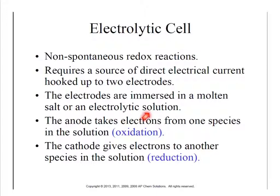In the case of an electrolytic cell, the anode is the one that is taking the electrons, and the cathode is the one that is giving the electrons.